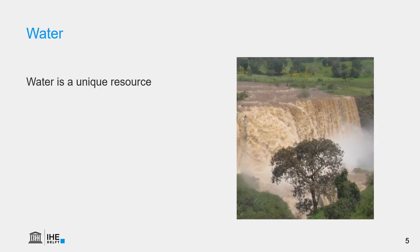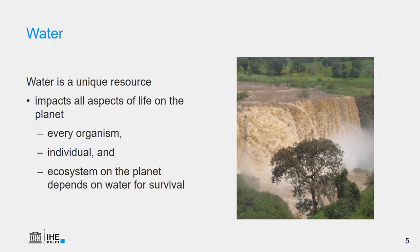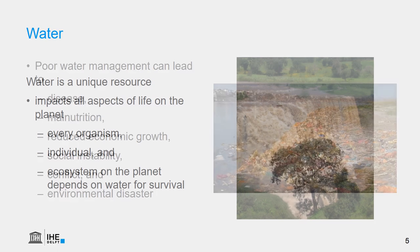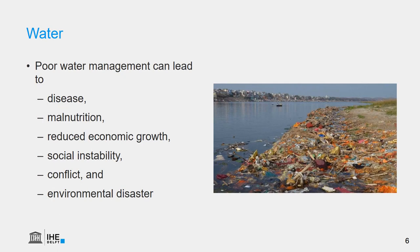Water is a unique resource. Everything on the planet depends on water for survival — every organism, every individual, and ecosystem. Water impacts all aspects of life on this planet. Because water impacts everything, poor water management and its shortage can lead to serious consequences. It can lead to diseases and malnutrition. Economic growth can be affected. It can lead to social instability and conflicts, and the environment will be negatively affected.